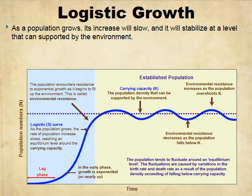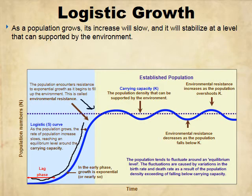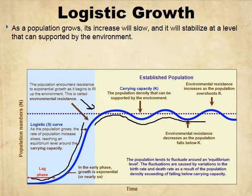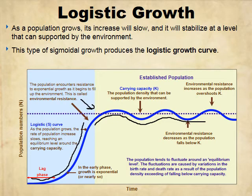With logistic growth, as the population grows the increase will slow and stabilize at a level that can be supported by the environment — your carrying capacity. There's a bit of a lag, then during the early phase the population grows exponentially — your J-curve. Then environmental resistance exerts pressure: there won't be as much food, water, or space. The population levels out and goes up and down around the carrying capacity, often due to predator-prey relationships and seasonal resource changes. The J-curve turns into an S-curve — this is our logistic growth curve.